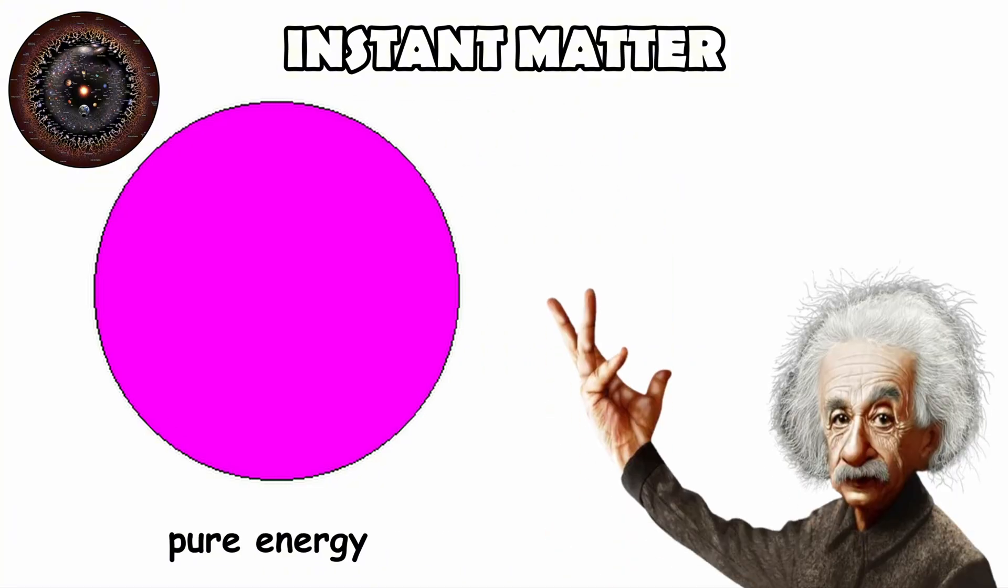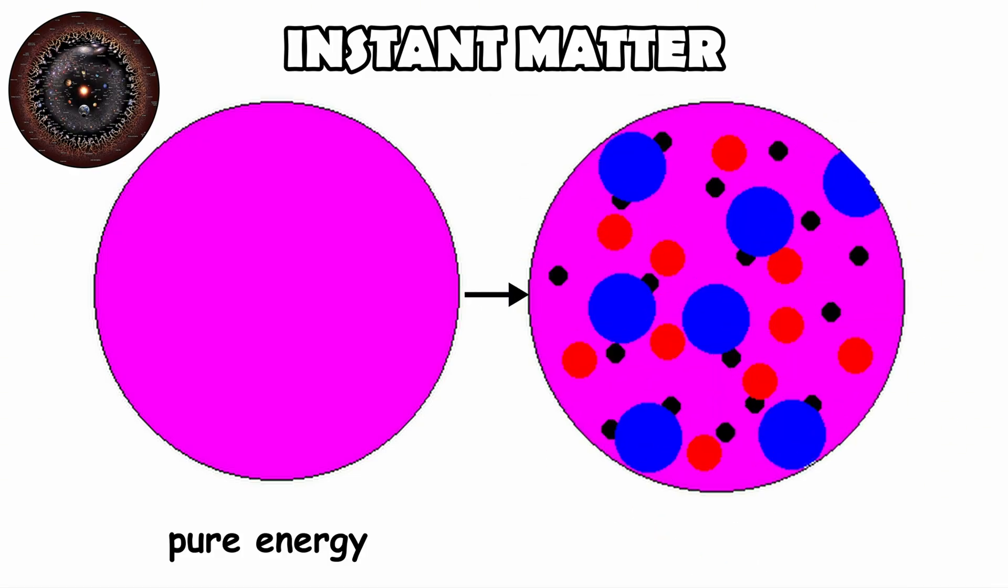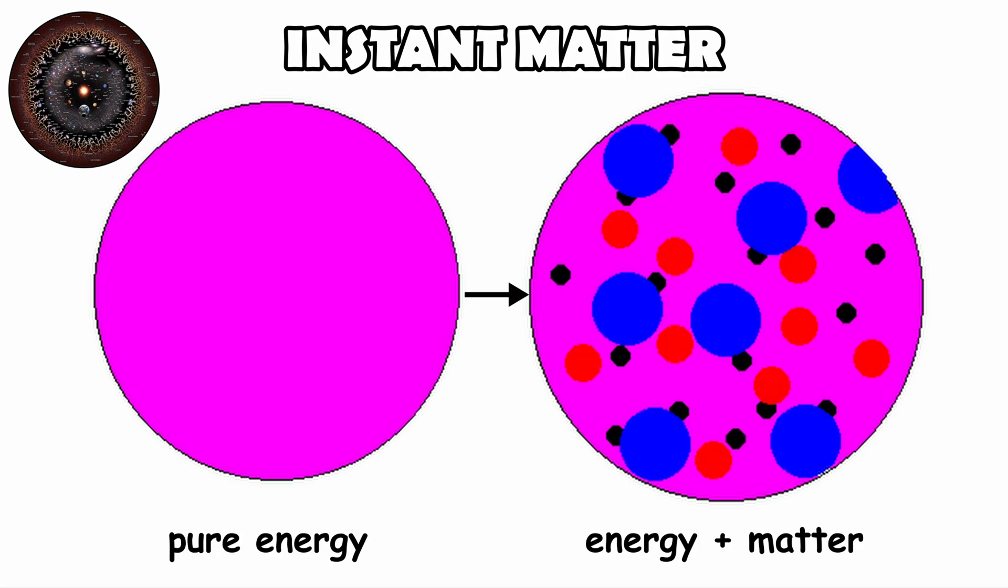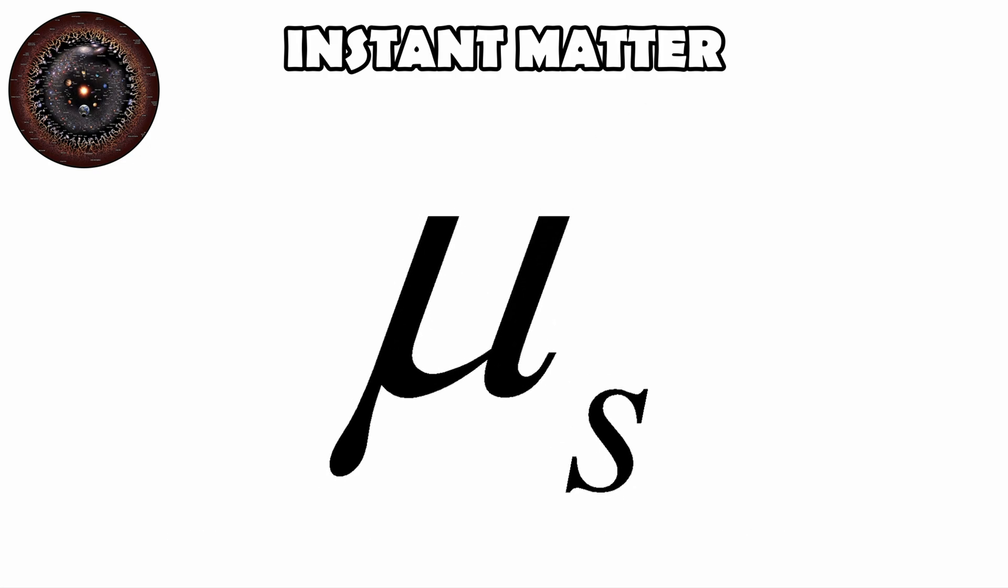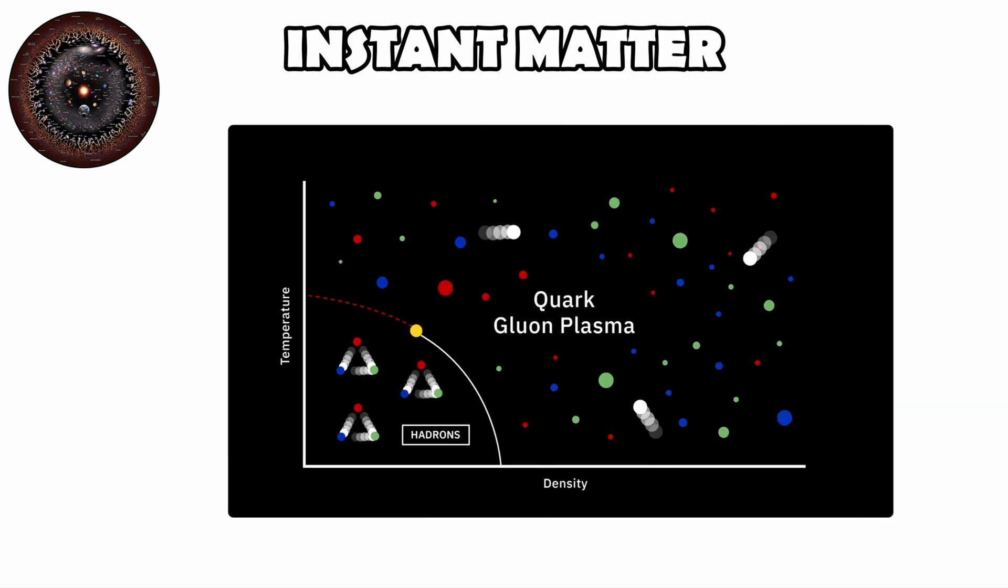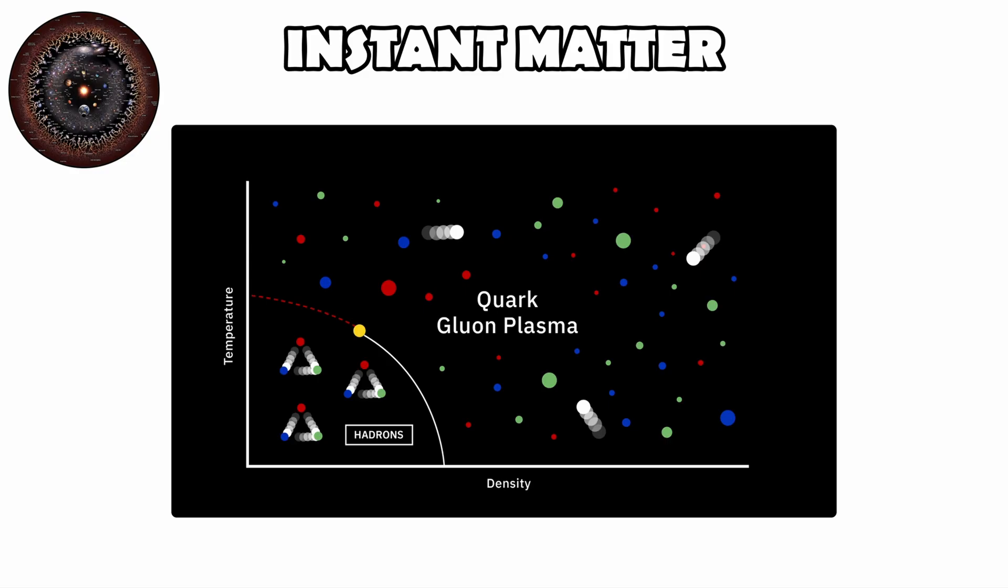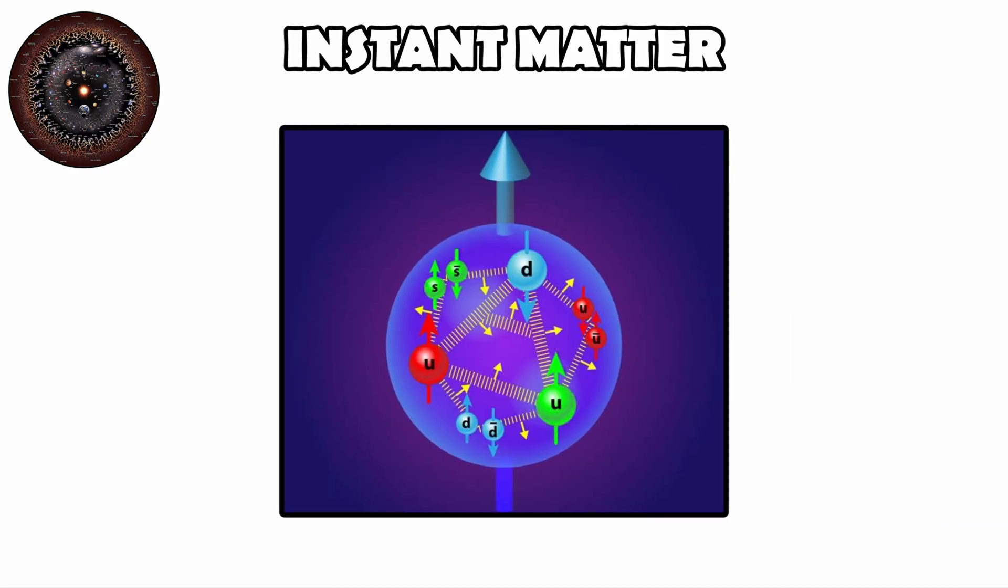According to Einstein's equation, energy and matter are interchangeable. As the universe expanded and cooled, energy transformed into particles. At about one microsecond after the Big Bang, the temperature dropped enough for quarks, the building blocks of protons and neutrons, to bind together.